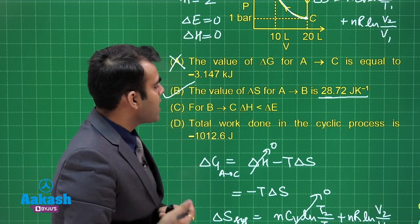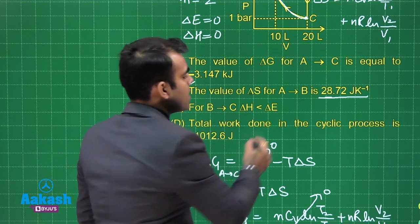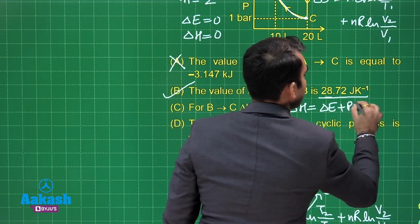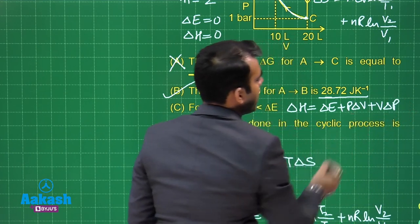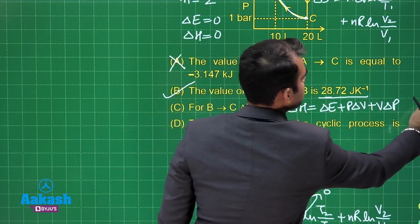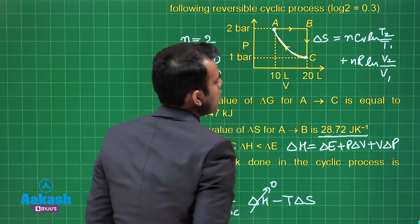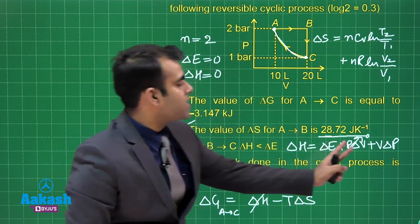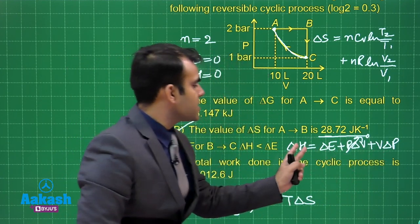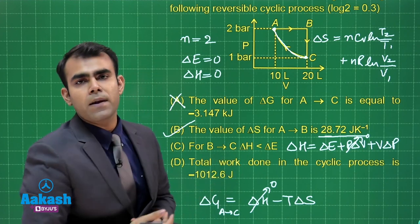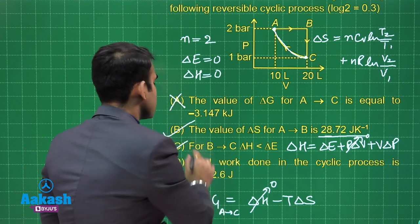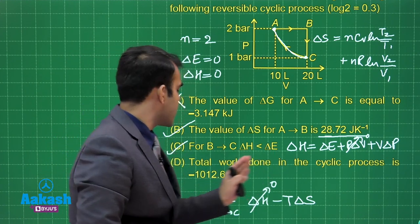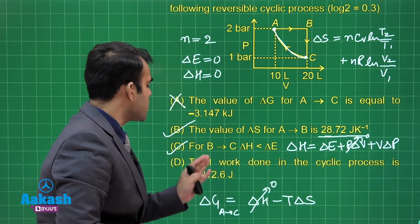For B to C, the question states ΔH < ΔE. Recall ΔH = ΔE + PΔV + VΔP. Since volume is constant for B to C, PΔV = 0. But VΔP is negative because pressure is decreasing. Therefore ΔE > ΔH, meaning this statement is also correct. And finally, the total work done in the cyclic process is given as −1012.6 J.